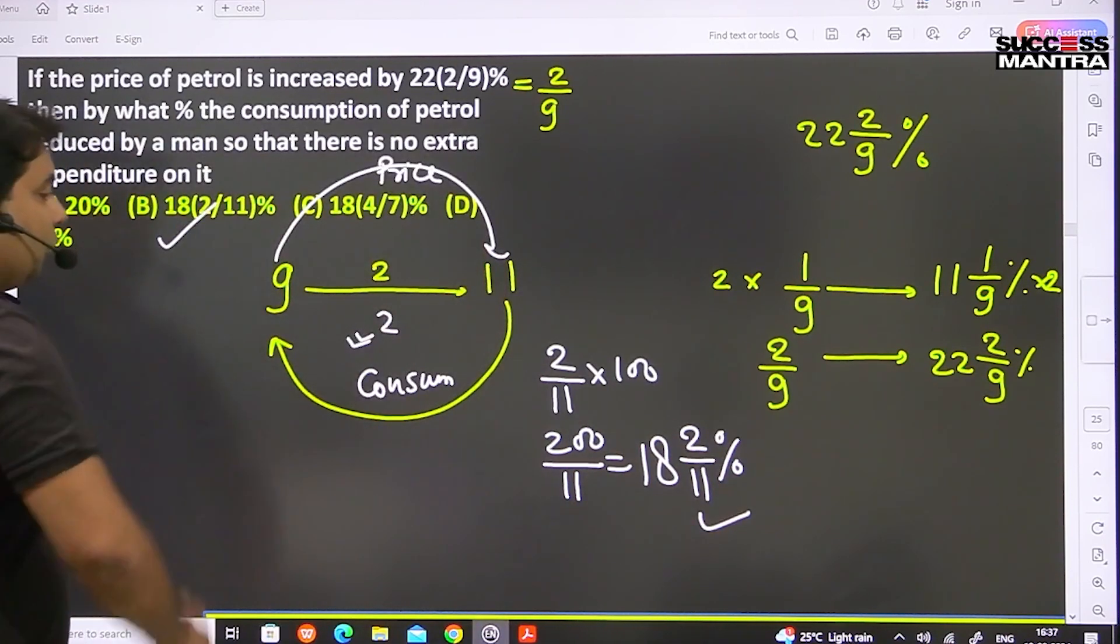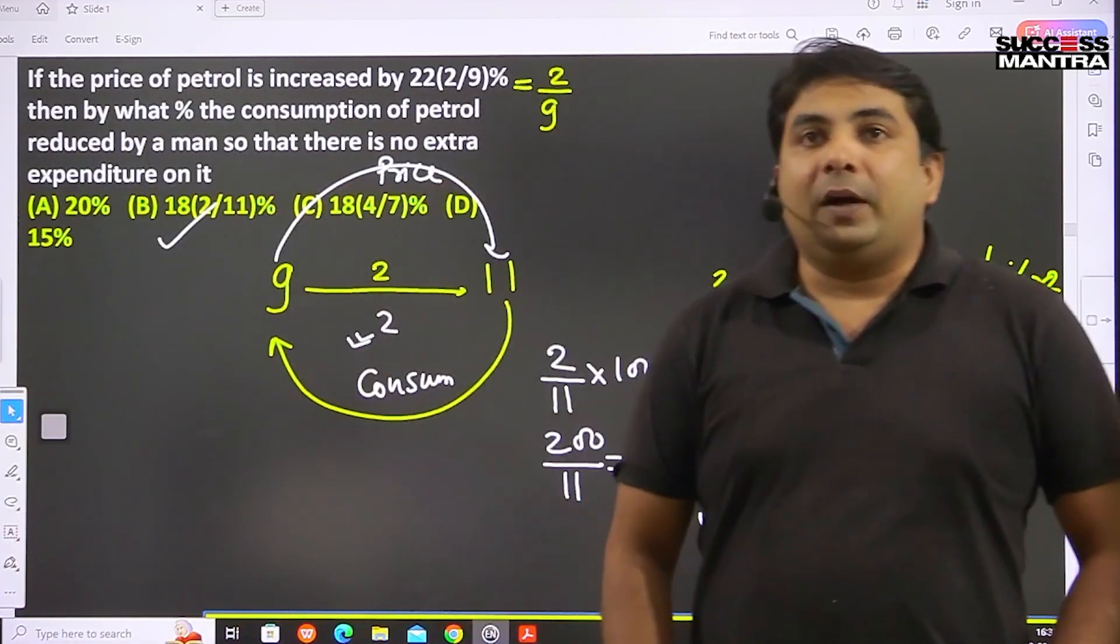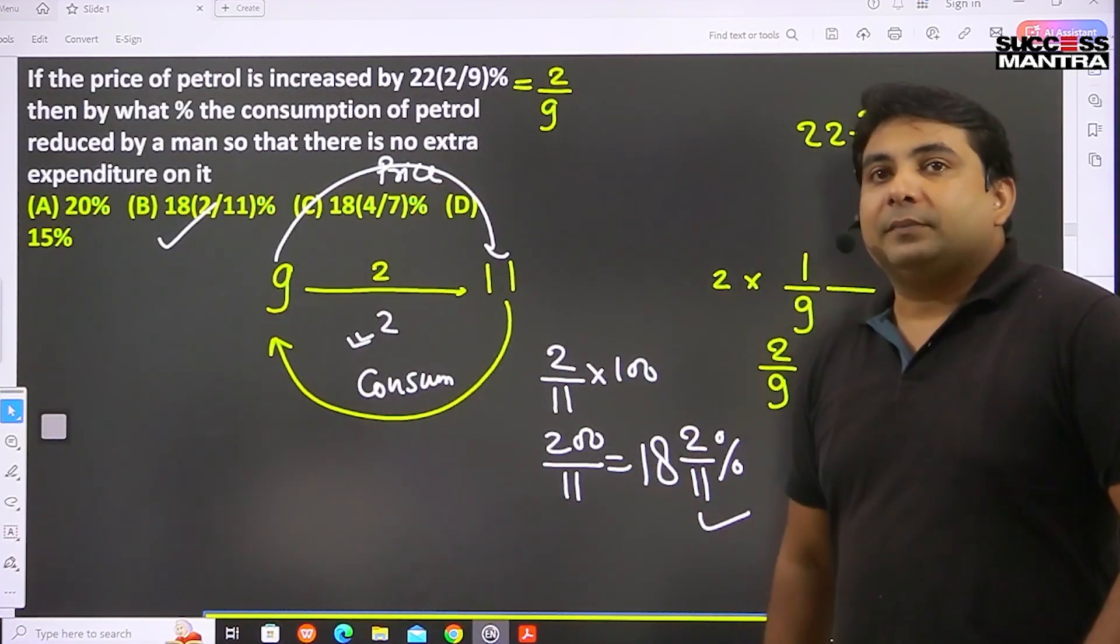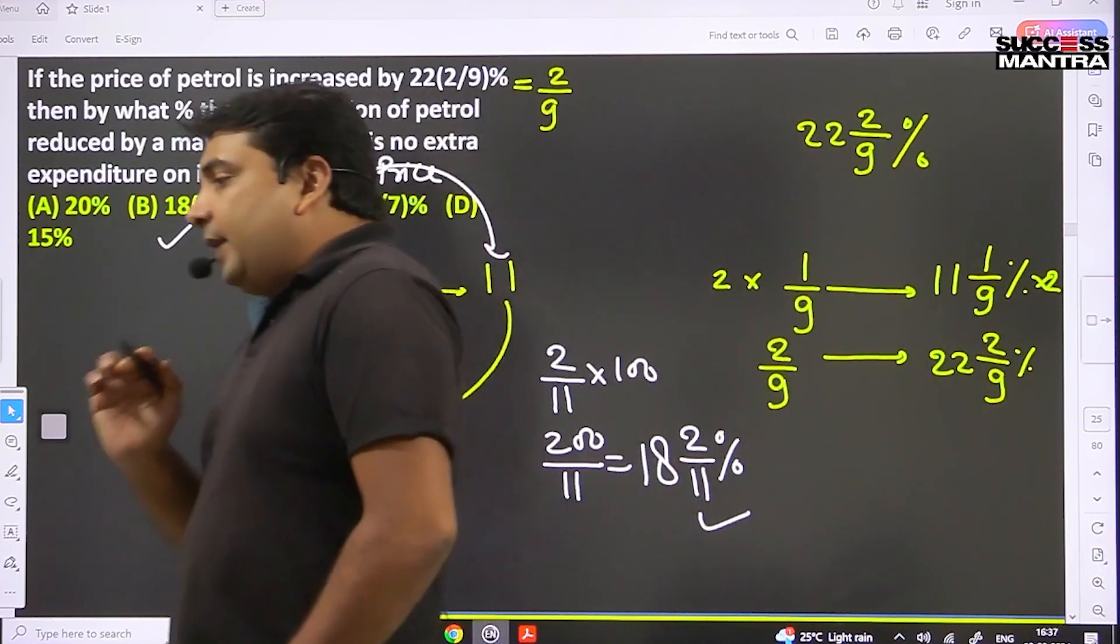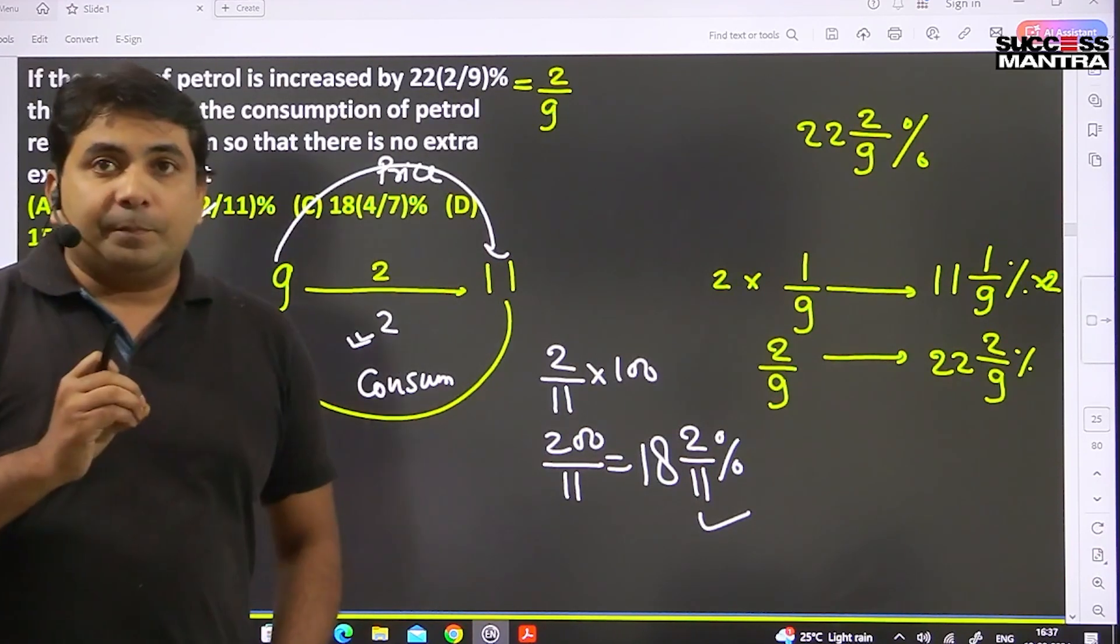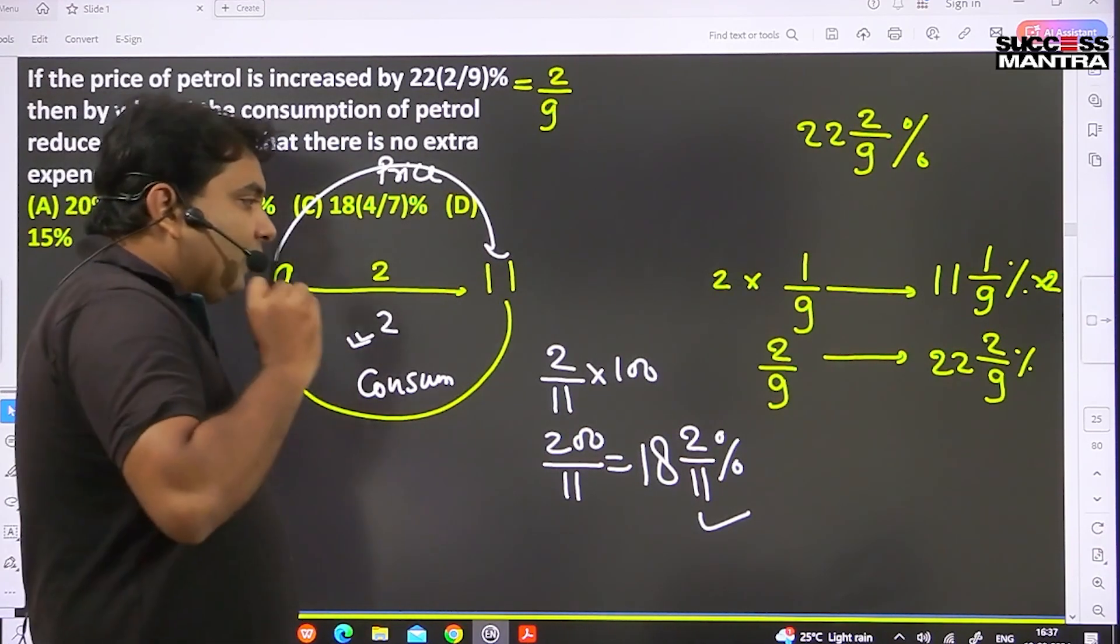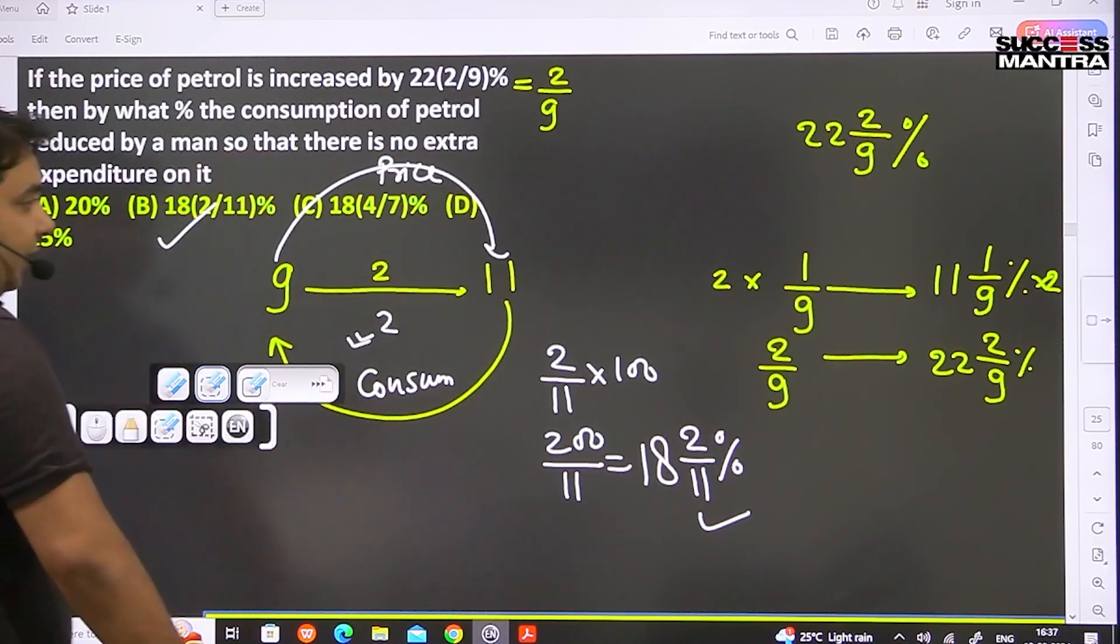So your consumption has decreased by 18 2/11 percent. Clear to everyone? No confusion? But the point is, how did you do this so easily? There's a small concept behind this, let me clear that - it will be better.